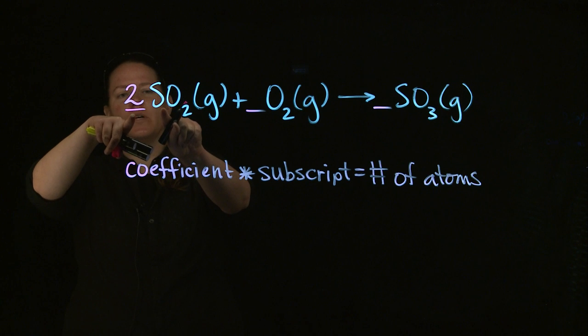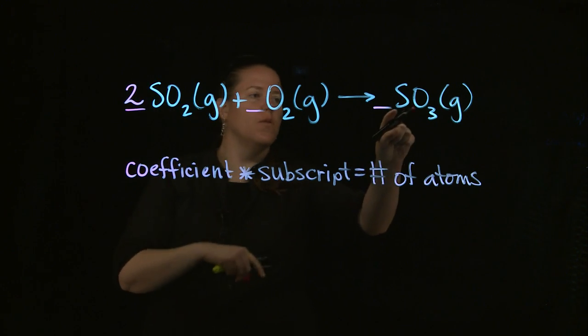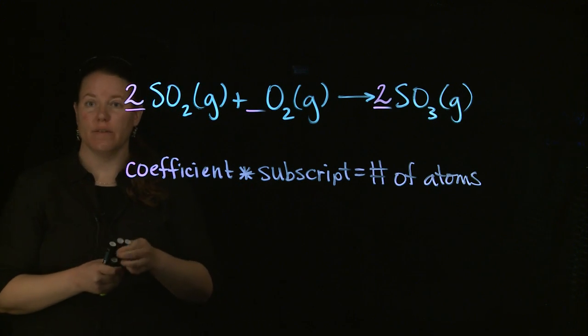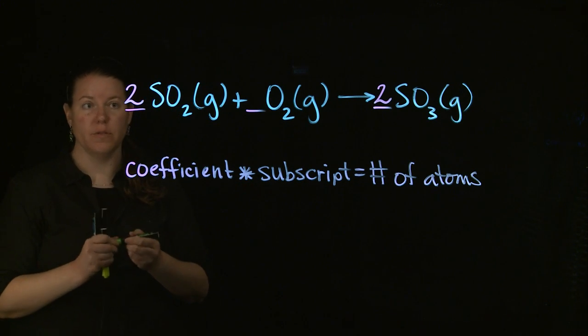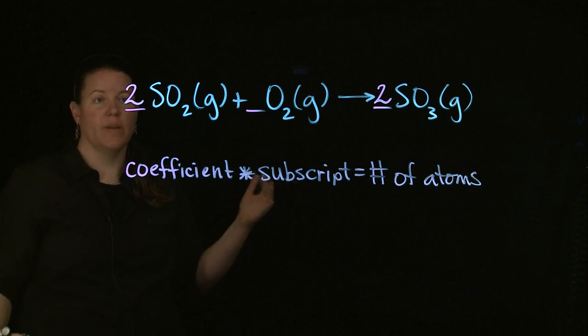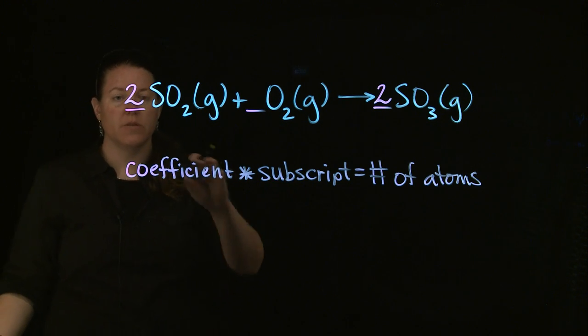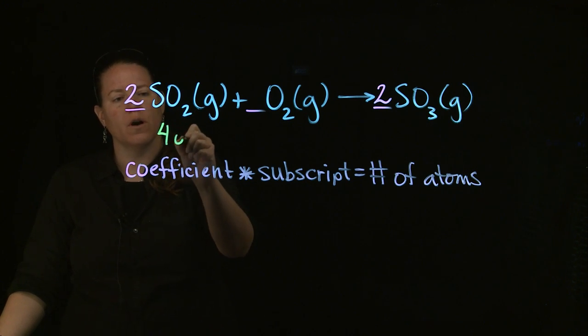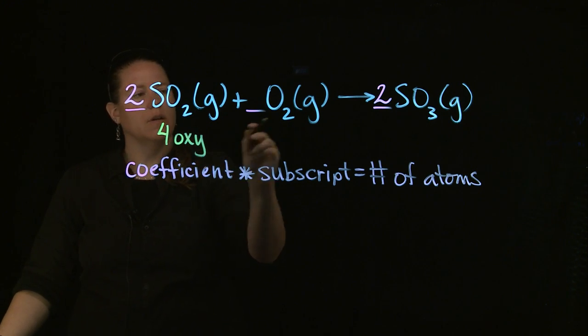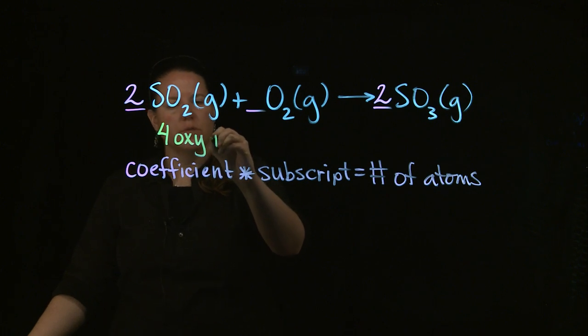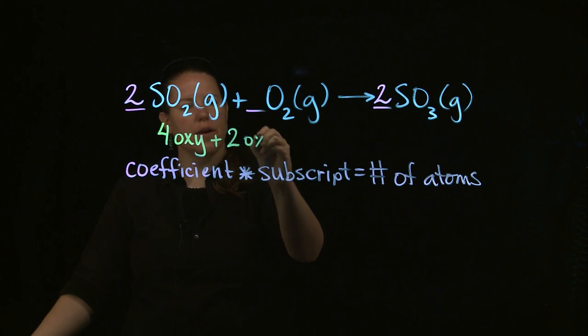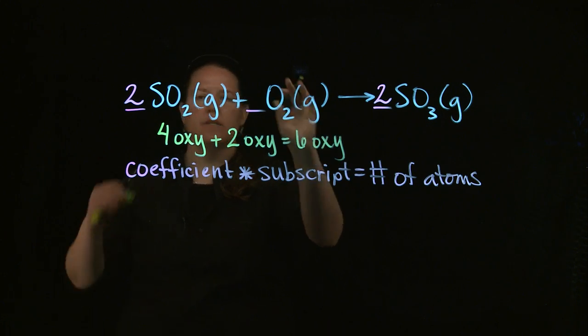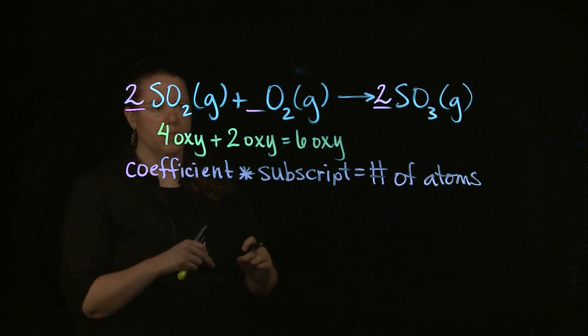So now let's look. I have two times one S's on this side and one times one S's, which means I need a two right there. We have two times two O's here, which is four oxygens. And I have one times two O's right there, which is two oxygens. That makes a grand total of six oxygens on the reactant side that I need to balance with.